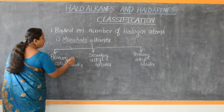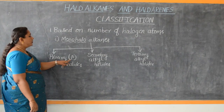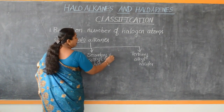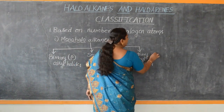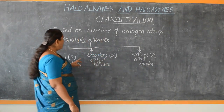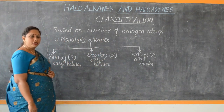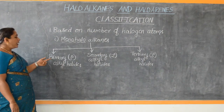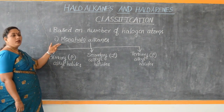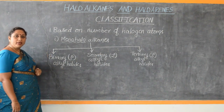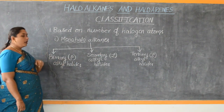Primary alkyl haloalkanes are represented as 1°, secondary as 2°, and tertiary as 3°. This representation refers to the type of carbon atom to which the halogen atom is attached. Primary alkyl haloalkanes are the mono-halogen derivatives of alkanes wherein the halogen atom is attached to a primary carbon atom, represented as RCH2X.